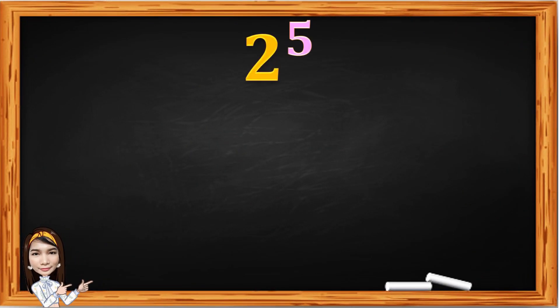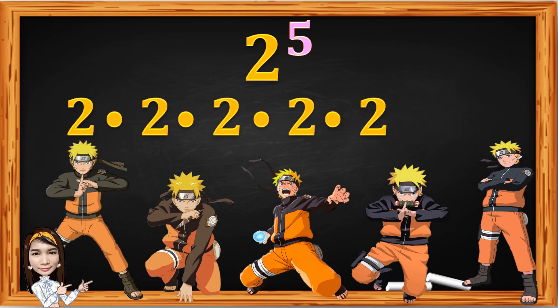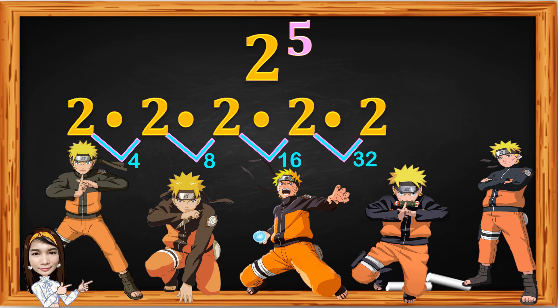Now let's have 2 raised to 5. Using the Kage Bunshin technique: 2 times 2 times 2 times 2 times 2. To get the value, we just multiply 2 times 2, 4 times 2, 8 times 2, 16 times 2 — 32. And the value of 2 raised to 5 is 32.